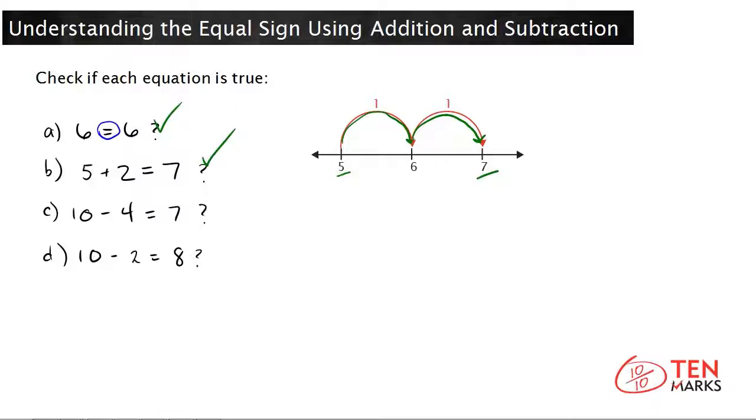Let's look at C. 10 minus 4 equals 7. First, you have to subtract 10 minus 4 and then see if that value equals 7 to know if the equation is true.